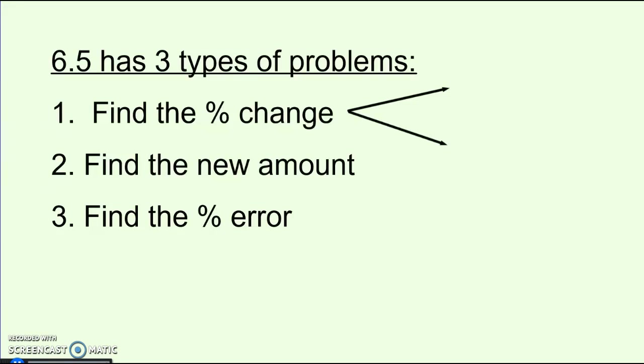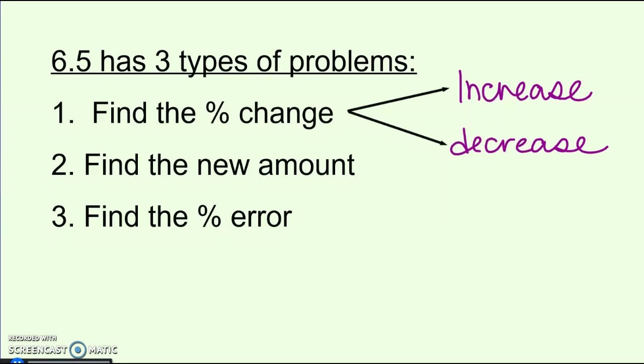The three types: finding the percent change — so either an increase if something has gone up, or a decrease if something has gone down; finding a new amount after there's been some sort of change, for example if something goes up by 5% or is on sale 15%; and percent error. We're going to learn the formulas for all of those.